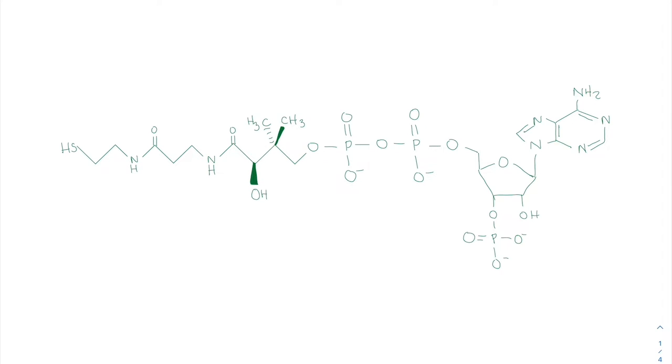Our SMVT transporter is how it's carried into the enterocytes and even other organs like the heart and things like the muscle, kidneys, liver. However, the brain absorbs pantothenic acid by facilitated diffusion.